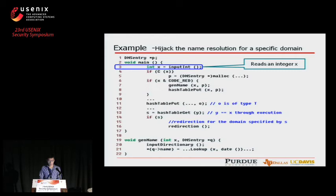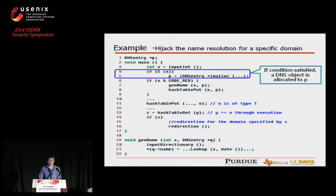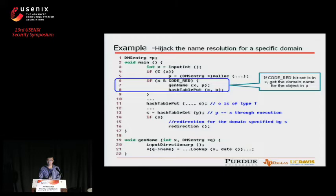The program reads the integer X at line 3. If the condition is satisfied at line 4, memory will be allocated and assigned to pointer P. Later on, if the code red bit is set in X, a domain name will be populated into the object P, and the object will be pushed into the hash table at line 8 using key X.